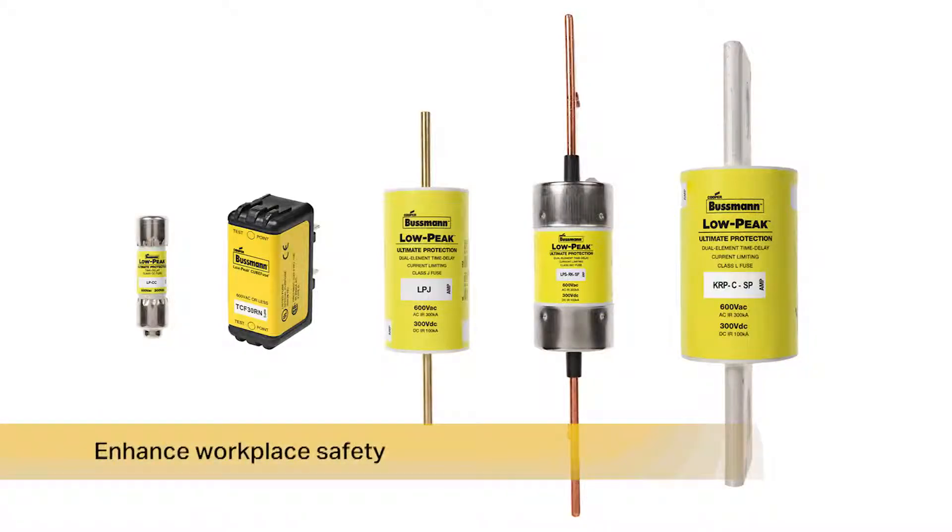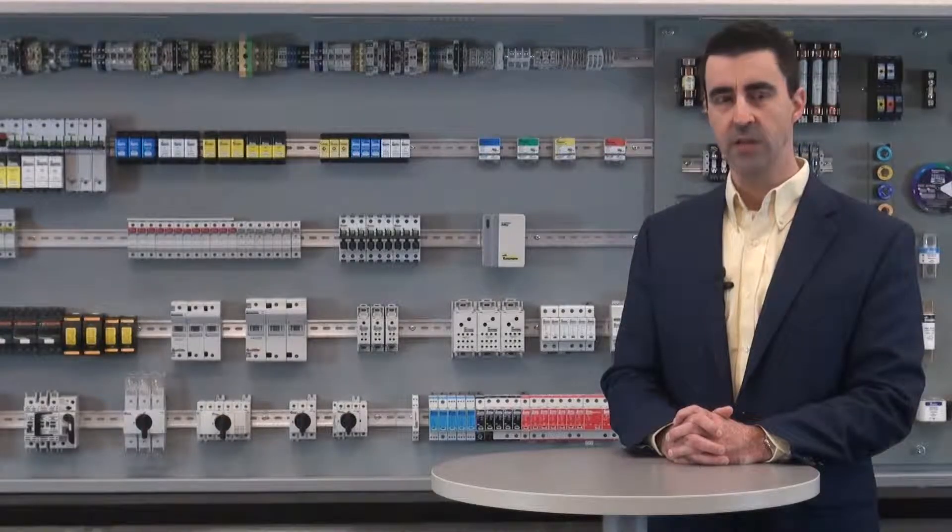Fuses that limit the let-through current to downstream components provide protection from thermal and magnetic forces while providing numerous benefits. Current limiting fuses enhance workplace safety by reducing the incident energy personnel are exposed to under fault conditions. Arc flash hazards may be greatly reduced when compared to using a non-current limiting overcurrent protective device, especially at 600 amps and below.